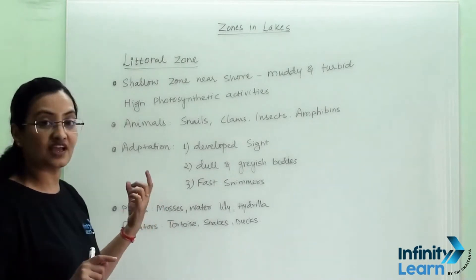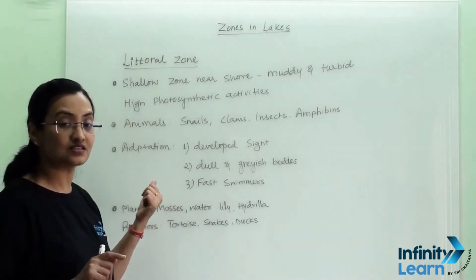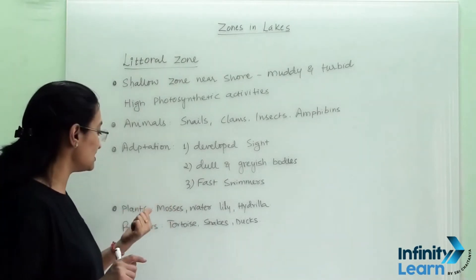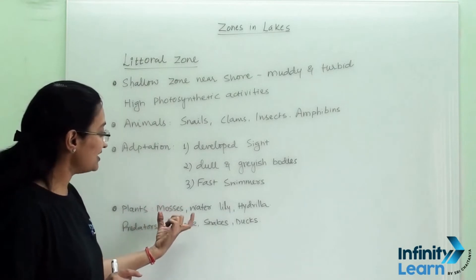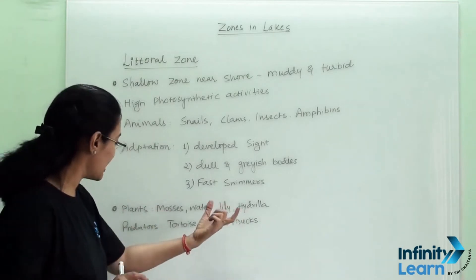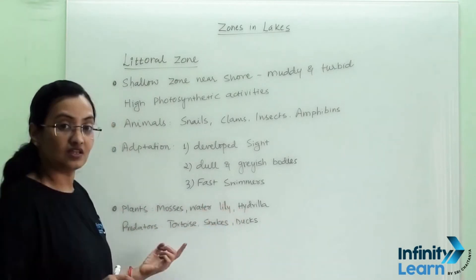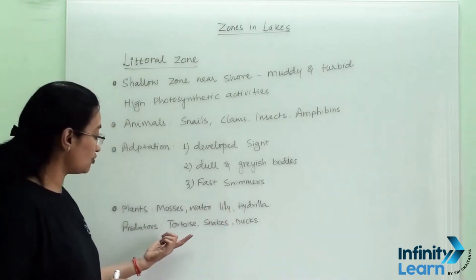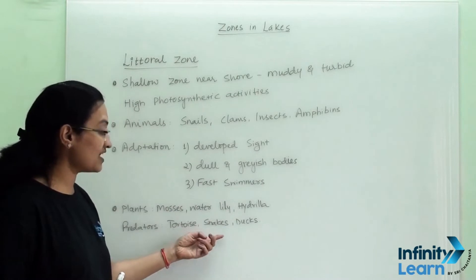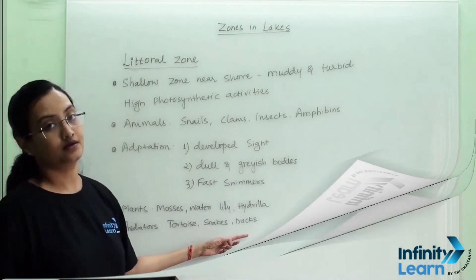Plants found in the littoral zone are water lily and hydrilla. The predators of this zone are tortoise, snakes, and ducks.